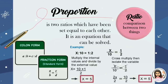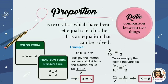Before we proceed, let's have an overview of proportion. Proportion is a mathematical expression showing the equality of two ratios, while ratio is known as the relationship of two distinct quantities. Proportions have several properties, some of which will be used in a discussion on the similarity of polygons.